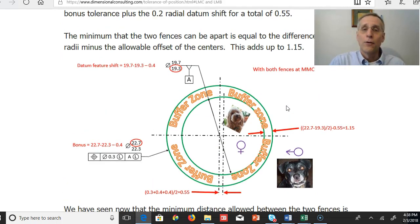Well, max material condition for the outer fence, being an external feature size, is going to be 22.7. Max material condition, and in this case max material boundary for the inner fence, is going to be at the smallest allowable size of 19.3.